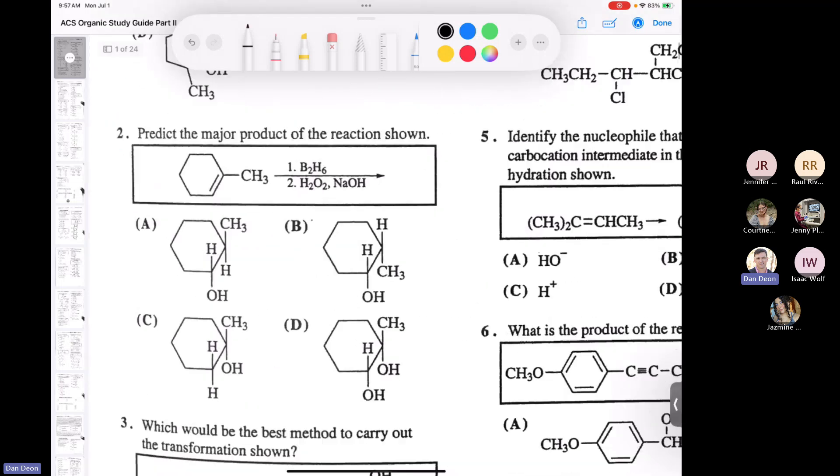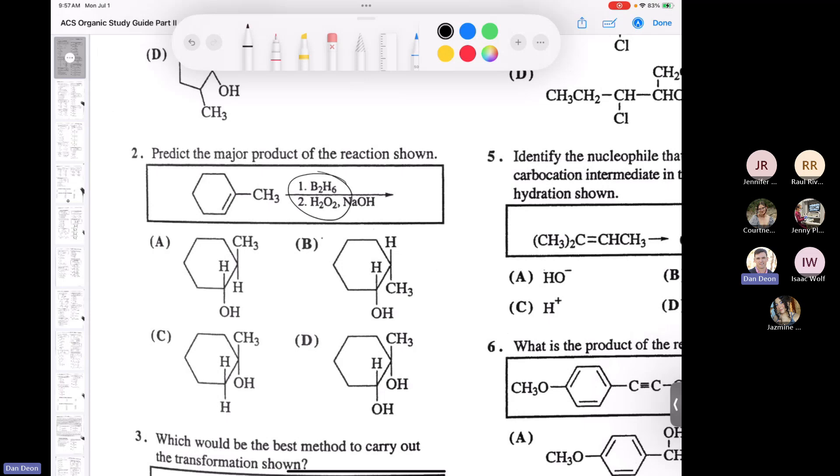So something that I told you, when we talked about hydroboration oxidation, I said that sometimes we write BH3·THF. And I said that sometimes in an ACS study guide or MCAT materials, they'll write B2H6. It means the exact same thing. So if I use B2H6 followed by hydrogen peroxide and sodium hydroxide, is this going to be Markovnikov addition of water or anti-Markovnikov addition of water?